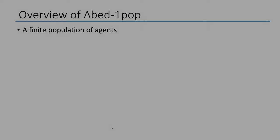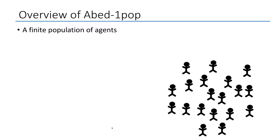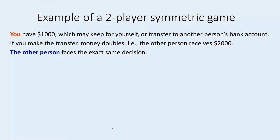Thanks for your interest in a-bet. In this first video we're going to give you a brief overview of a-bet. In a-bet there is one finite population of agents. These agents are explicitly and individually represented in the model, and from time to time each individual agent is matched with other agents to play a two-player symmetric game.